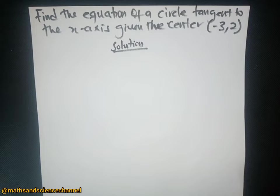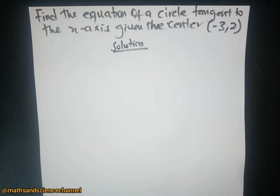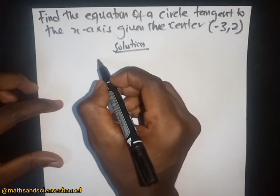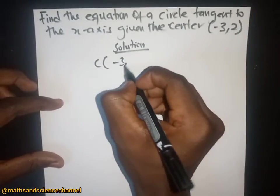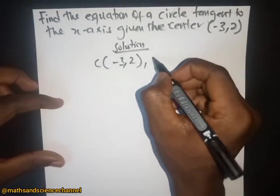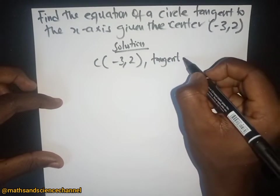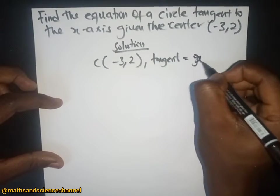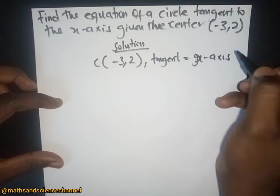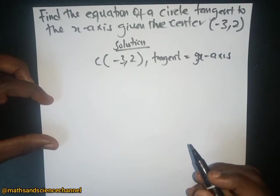Welcome once again to another section on the equation of a circle. This time we are to calculate the equation of a circle tangent to the x-axis, giving the center as negative three and two. We are given the center as (-3, 2) and the circle is tangent to the x-axis.